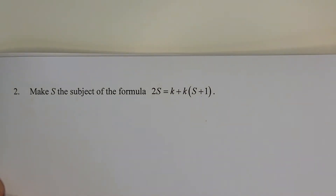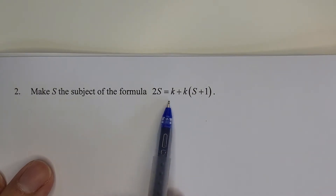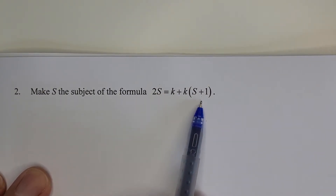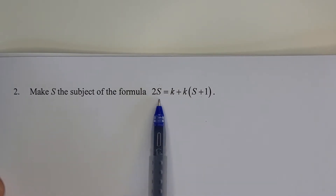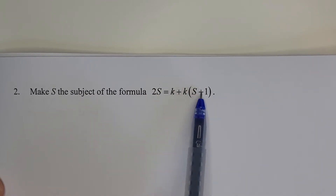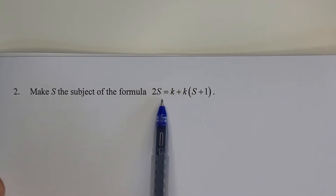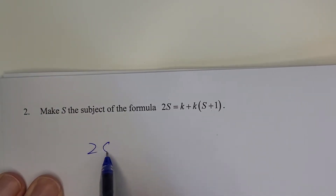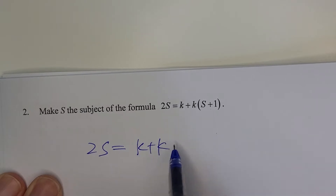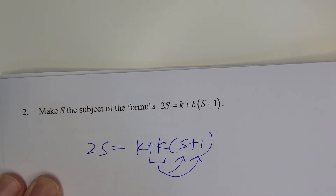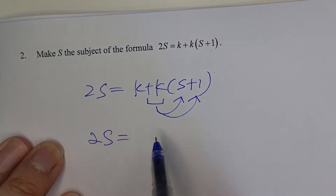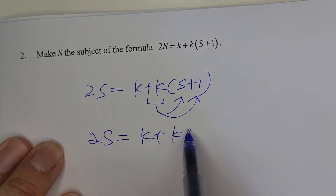Let's move to question number two. Make s the subject of the formula: 2s equals k plus k bracket (s plus 1). There is an s on the right-hand side and another s on the left-hand side, so you need to get all s terms on one side. First, do the multiplication — expand the bracket so k multiplies each term inside — giving k plus ks plus k.